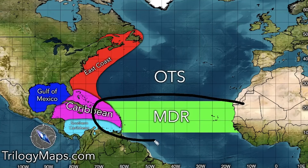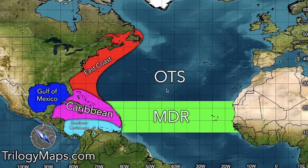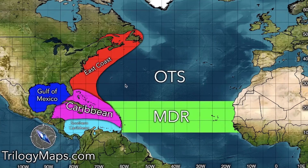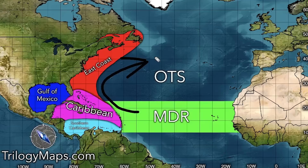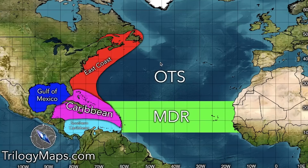About 60 to 75% of storms start at some point in the MDR. OTS stands for 'out to sea.' For the East Coast, anything west of Bermuda is considered an East Coast threat and will bring impacts there, while anything at or east of Bermuda is considered out to sea.